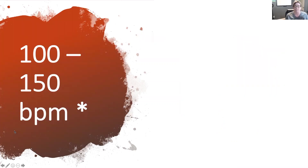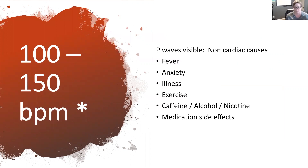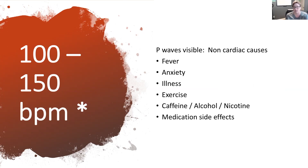Sinus tachycardia typically involves a heart rate between 100 and 150 beats per minute, and there are many things that can cause it. For example, a fever raises the heart rate as the body supports its need for oxygen and nutrition. Anxiety — like meeting the in-laws for the first time — or exercise can cause a temporary elevation. All of these need to be treated uniquely. Other common causes include caffeine, alcohol, and nicotine, as well as medication side effects.